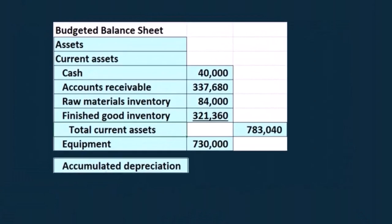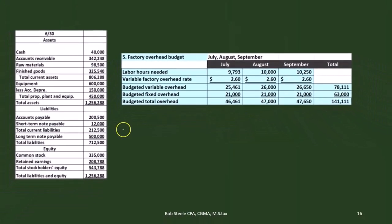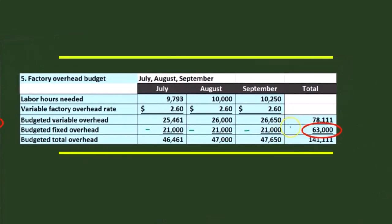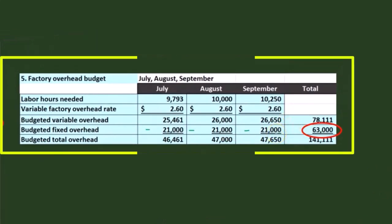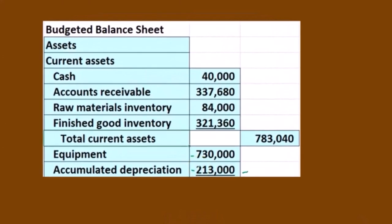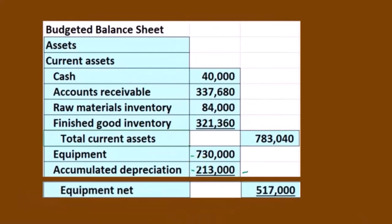Then we have the accumulated depreciation, which we use to reduce the equipment. We take the balance sheet from the last period — last period's accumulated depreciation was $150,000. The budgeted overhead gave us $21,000 a month, or $63,000 for the quarter. The $150,000 plus the $63,000 in accumulated depreciation gives us $213,000. Taking the $730,000 minus the $213,000, we have a book value of the equipment of $517,000.